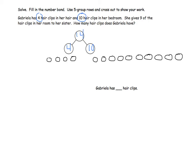Since Gabriela gives 9 of the hair clips to her sister, I will cross off 9 circles from the 10 to find out how many hair clips Gabriela has. So, I will cross off 9. 1, 2, 3, 4, 5, 6, 7, 8, 9.